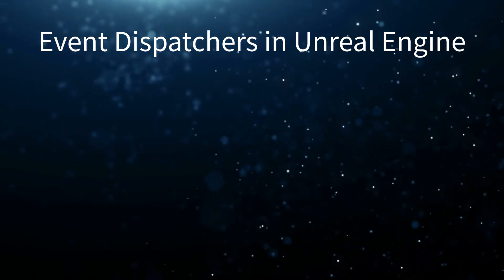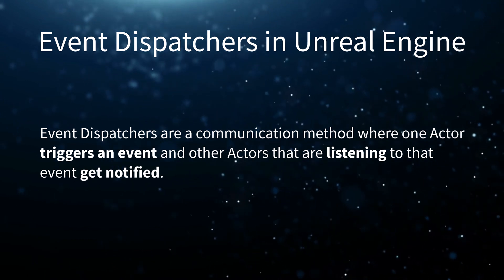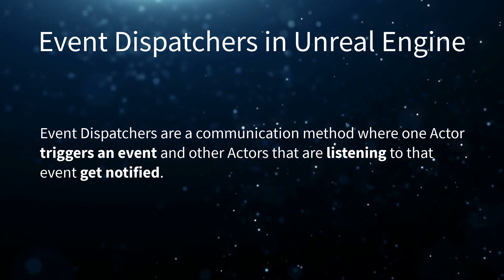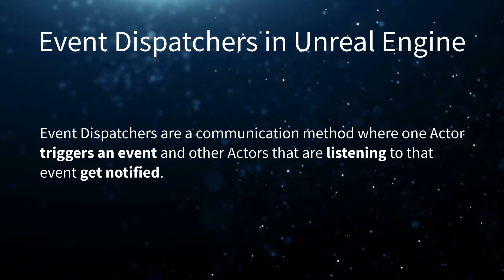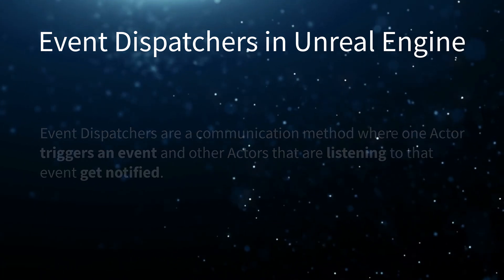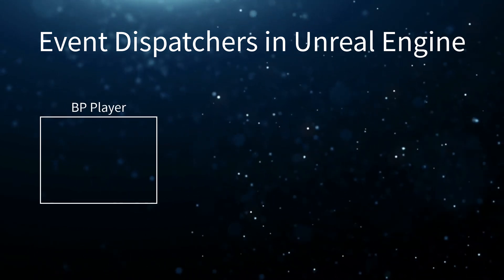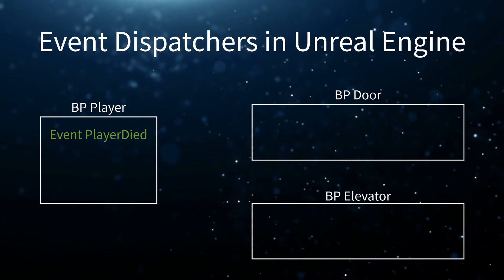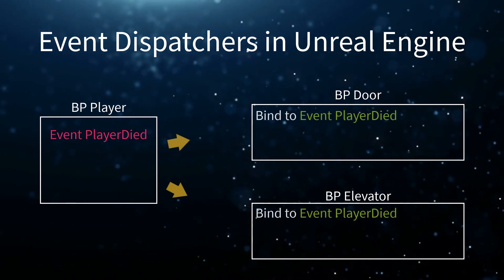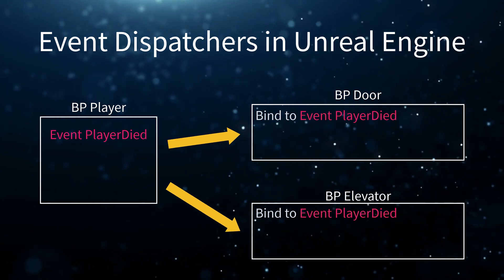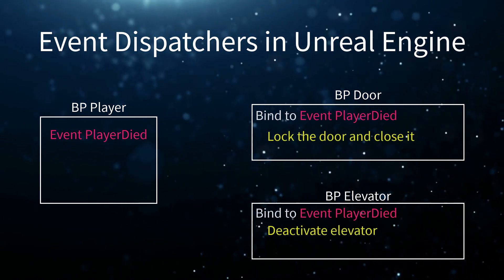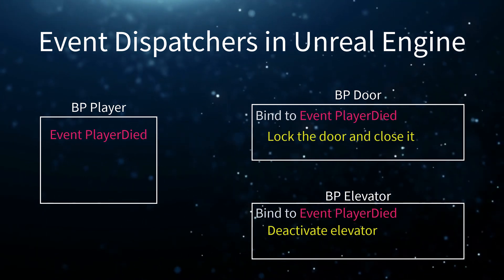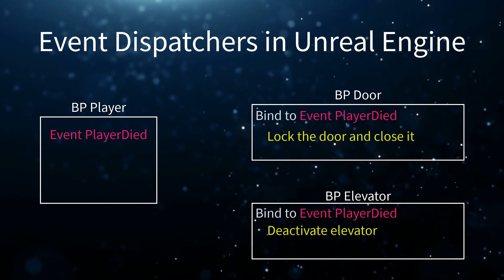Event dispatchers are a communication method where one actor triggers an event and other actors that are listening to that event get notified. Unlike direct communication and interfaces, this method of communication can be one-to-many. If no actor is listening to the event dispatcher, nothing will happen — similar to calling an interface function where the target actor doesn't have that interface implemented.